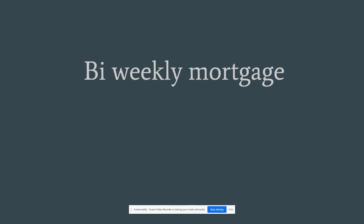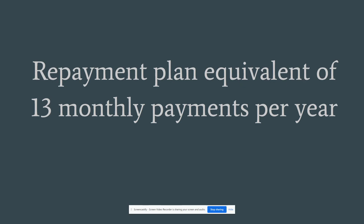Bi-weekly mortgage. This is a repayment plan equivalent to 13 monthly payments. People always get this confused — you're not paying the full loan amount every two weeks. You're actually paying half of the monthly payment every two weeks, and that equates to 13 full payments. The 13th full payment goes all towards principal at the end of the year. So basically you're making one extra full principal payment per year, which helps you pay off the loan quicker.